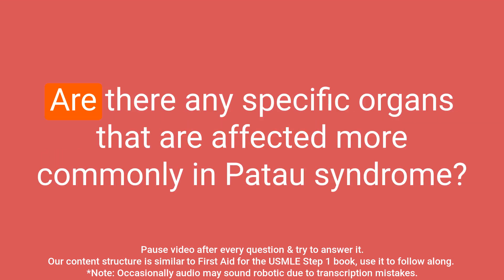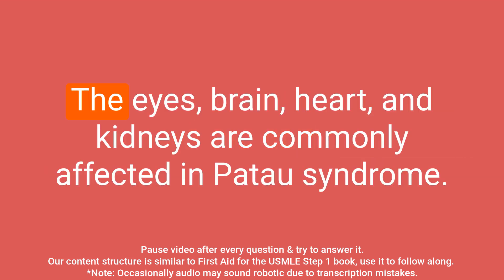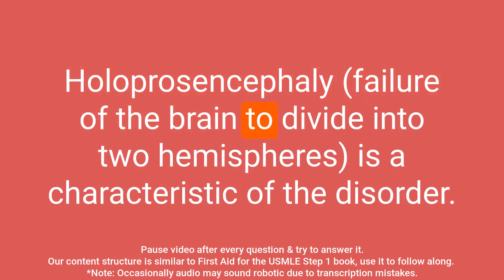Question: are there any specific organs that are affected more commonly in Patau syndrome? Answer: the eyes, brain, heart, and kidneys are commonly affected in Patau syndrome. Holoprosencephaly is a characteristic finding of the disorder.